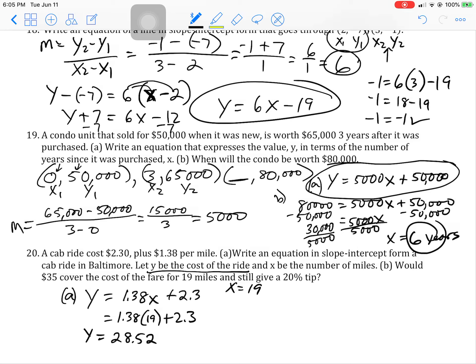So for just the fare, it would be that. So how do you find 20% of that number? Multiply by 0.2. So the tip you're going to leave is $5.70. So if the fare is $28.52 and the tip is supposed to be $5.70, then this is going to be $34.22. Yep, you can hand them $35 and that will cover it.